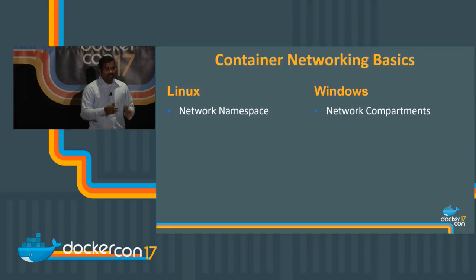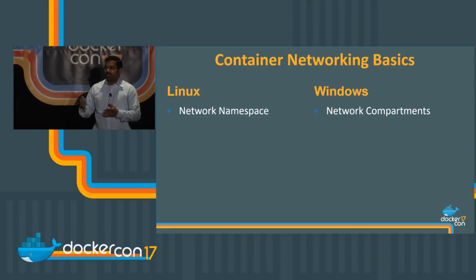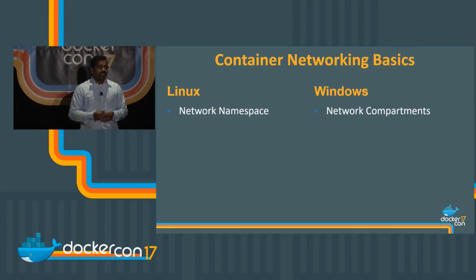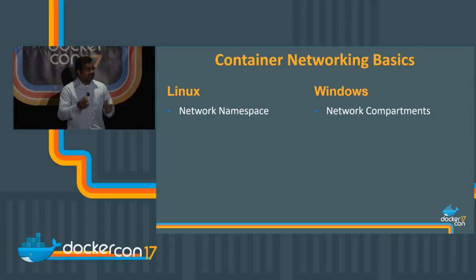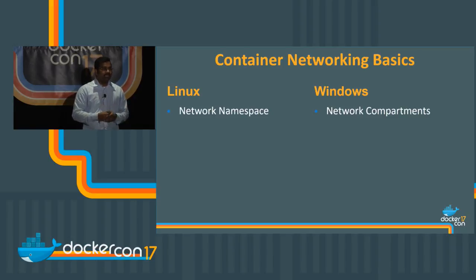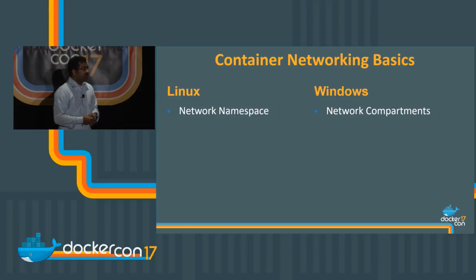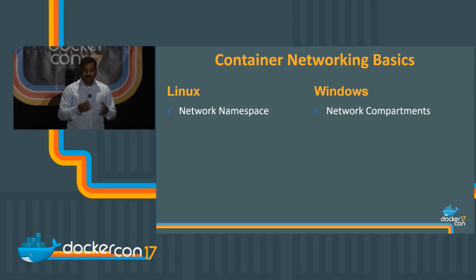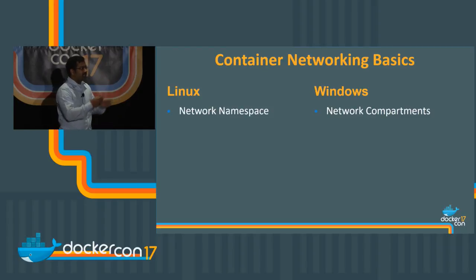Compartments are basically a logical container in the TCP/IP stack. The network layer in TCP/IP is responsible for making sure that the compartment is completely isolated and packet forwarding between compartments is prevented. This gives you natural isolation for containers. All IP objects — interfaces, addresses, prefixes, routes — everything lives inside that compartment.